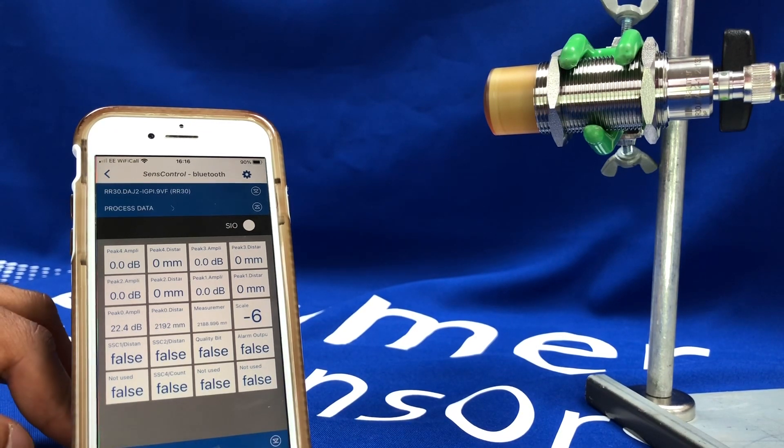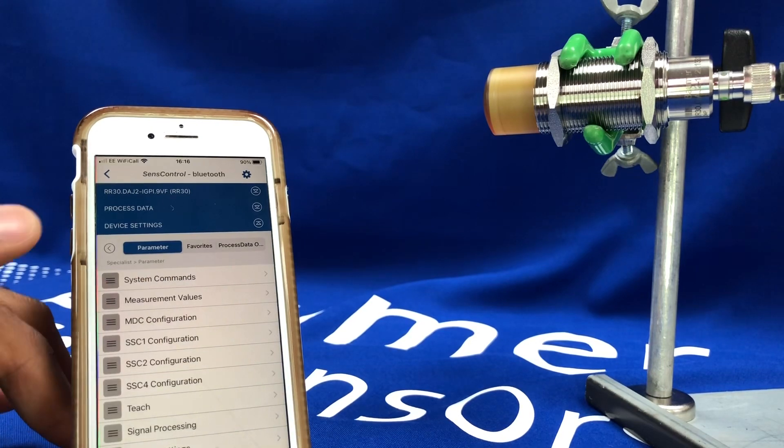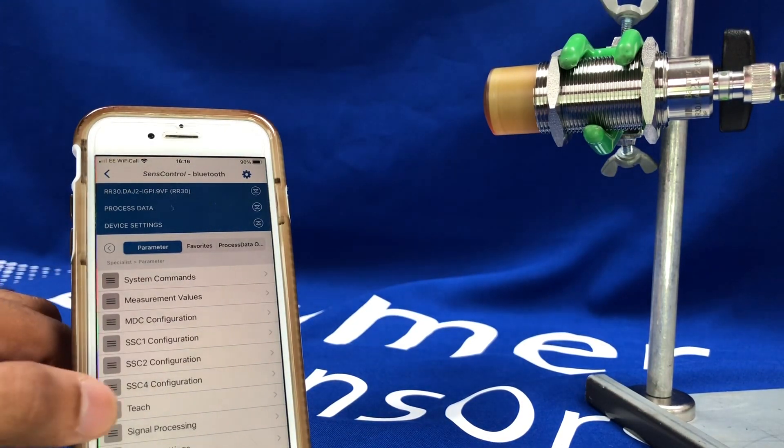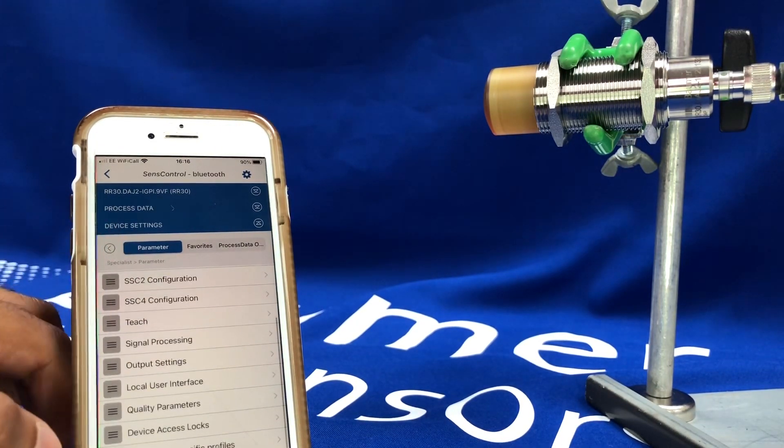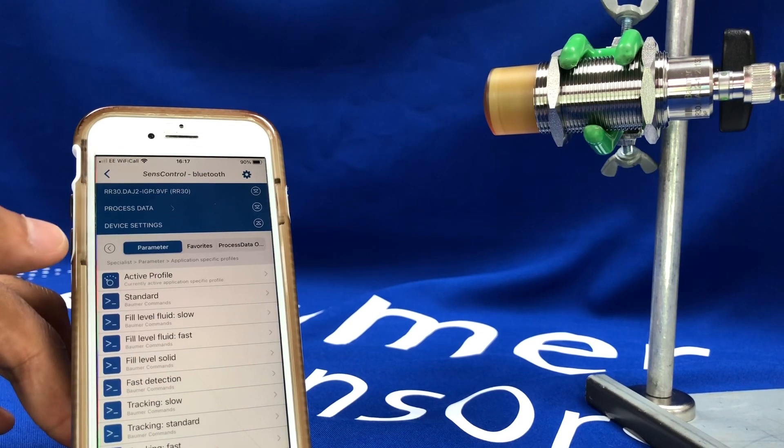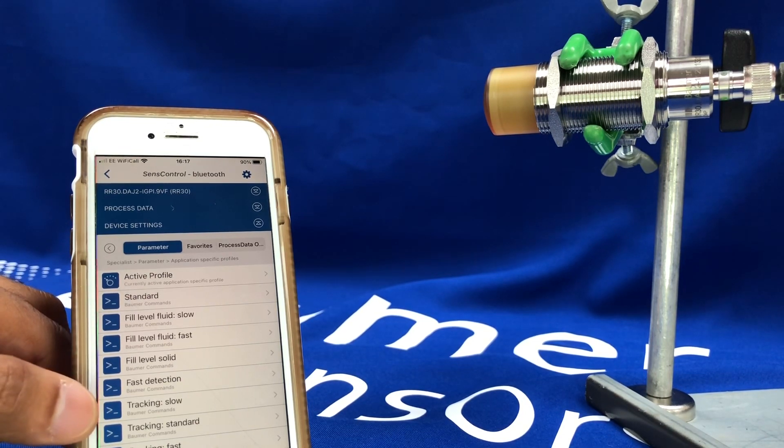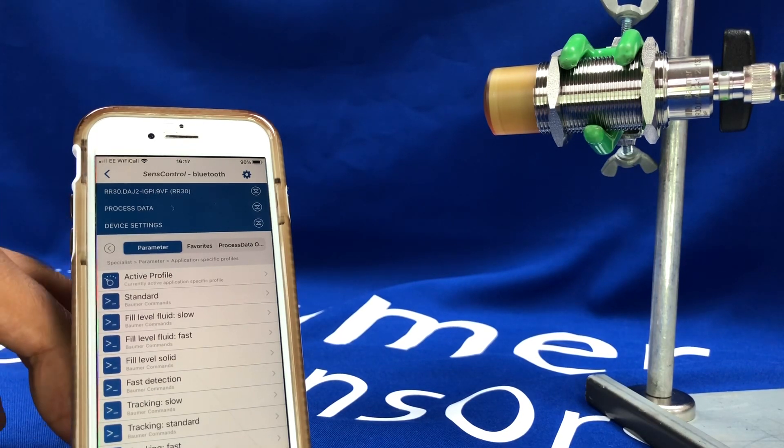I can go into the device settings of the sensor, going to the parameters, all the different capabilities and options you have. It's got some nice application-specific profiles already selectable: standard applications, fill level applications within tanks, etc., that you can select that have predefined filters to get the best result out of the sensor.